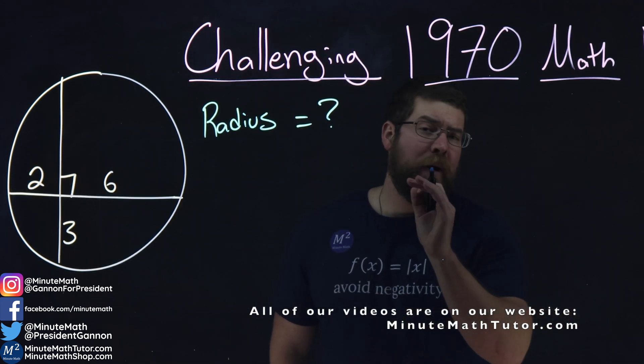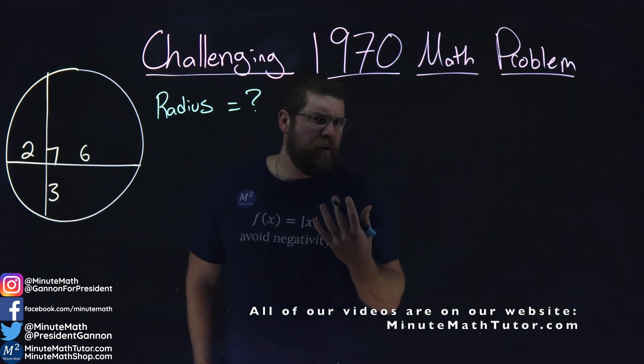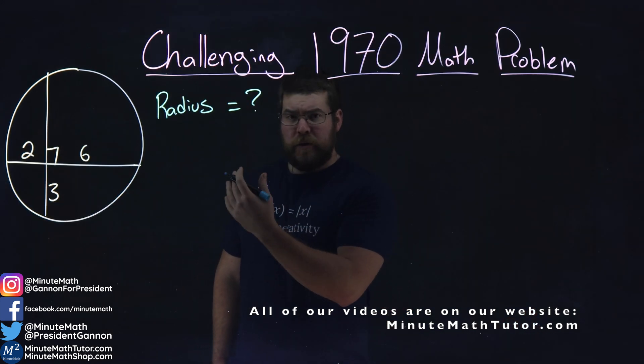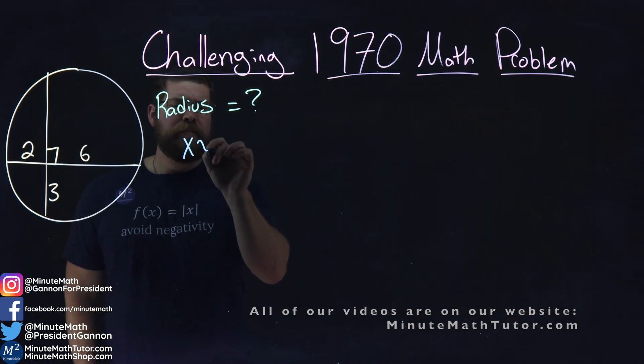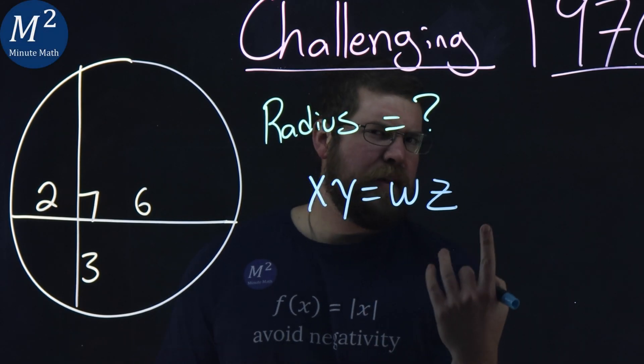One thing we know about chords is that we have the intersecting chords theorem, and that tells us with two chords that intersect that x times y is equal to w times z. So what does that tell us here?